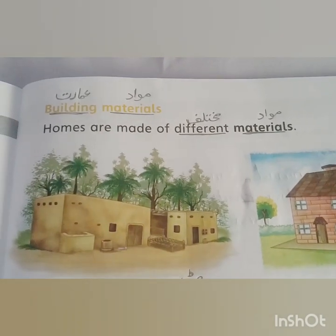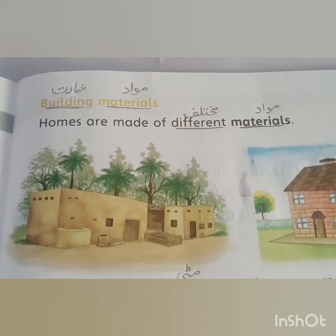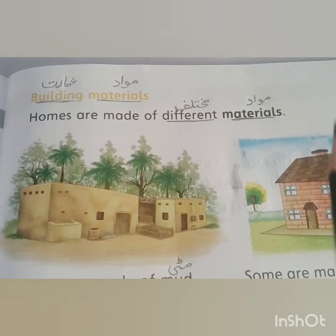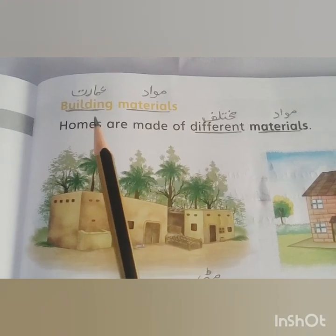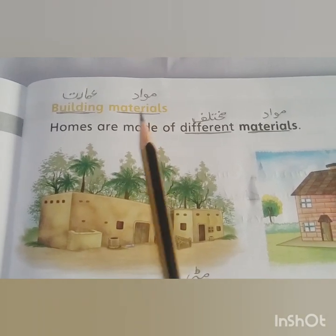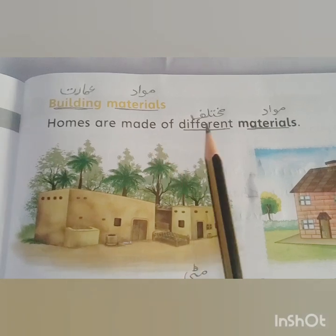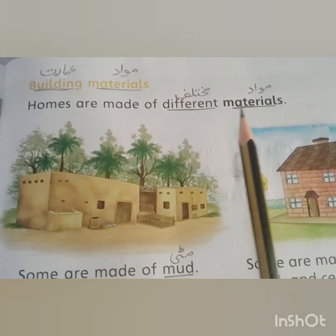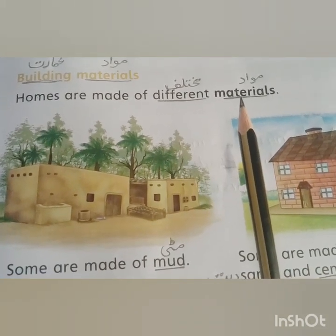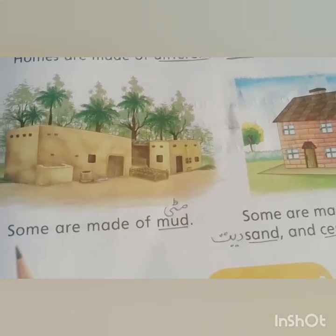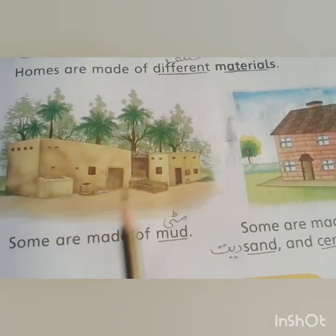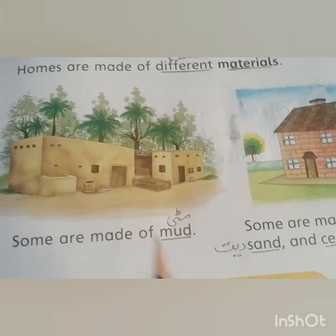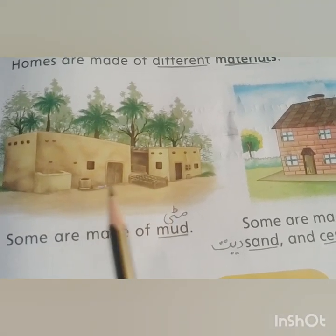Now we will read about the different kinds of houses and building materials. 'Building' means 'imarat' and 'materials' means 'mawad'. Homes are made of different materials — ghar mukhtalif cheezoun se banay hotay hain. Number one: some are made of mud — kuch ghar mitti ke banay hotay hain.